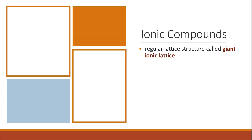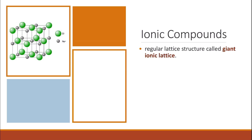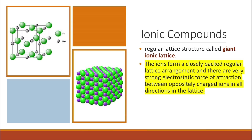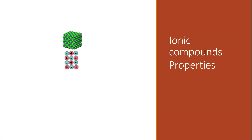The structure of ionic compounds: ionic compounds have a regular lattice structure called the giant ionic lattice, where the ions form a closely packed regular lattice arrangement, with very strong electrostatic interactions all around the structure. Ionic compounds will not conduct electricity as solids because the ions are not free to move — they are held strongly within the giant ionic lattice and cannot carry the charge.